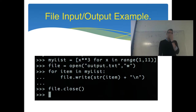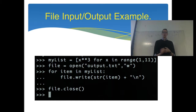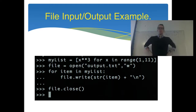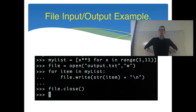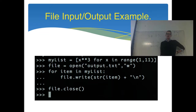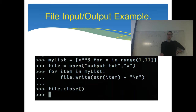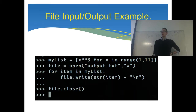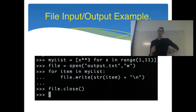So let's write a file. We're going to use list comprehension to create a list, then use .write to write that list to an output file. We're in the Python interactive environment — you can see the arrows at the start of each line. I'm creating a variable called my_list using list comprehension: x cubed for every x in range(1, 11), so it will compute 1 cubed, 2 cubed, 3 cubed, and put them all into my_list.